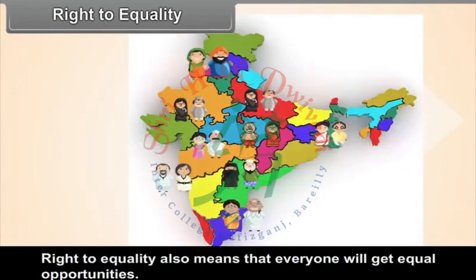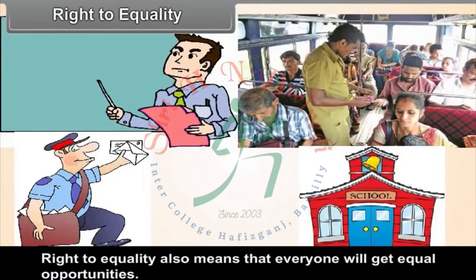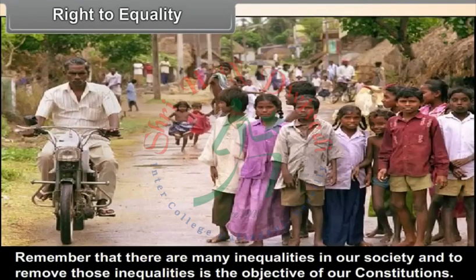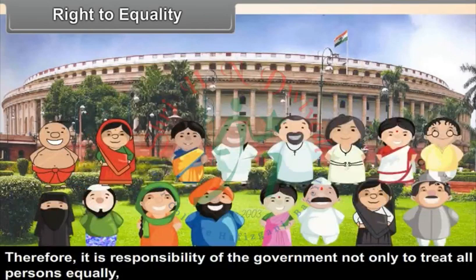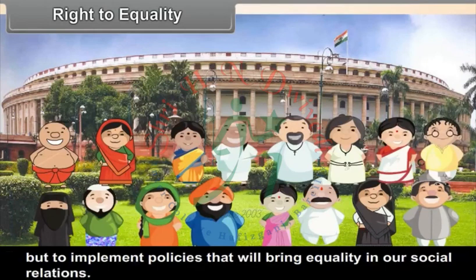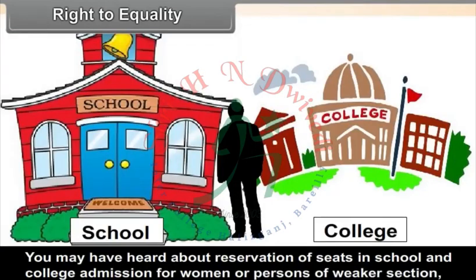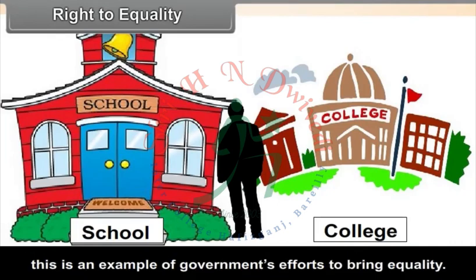Right to equality also means that everyone will get equal opportunities. There are many inequalities in our society, and to remove those inequalities is an objective of the Constitution. Therefore, it is the responsibility of the government not only to treat all persons equally but to implement policies that will bring equality in our social relations. Reservation of seats in school and college admissions for women or persons of weaker sections is an example of the government's efforts to bring equality.